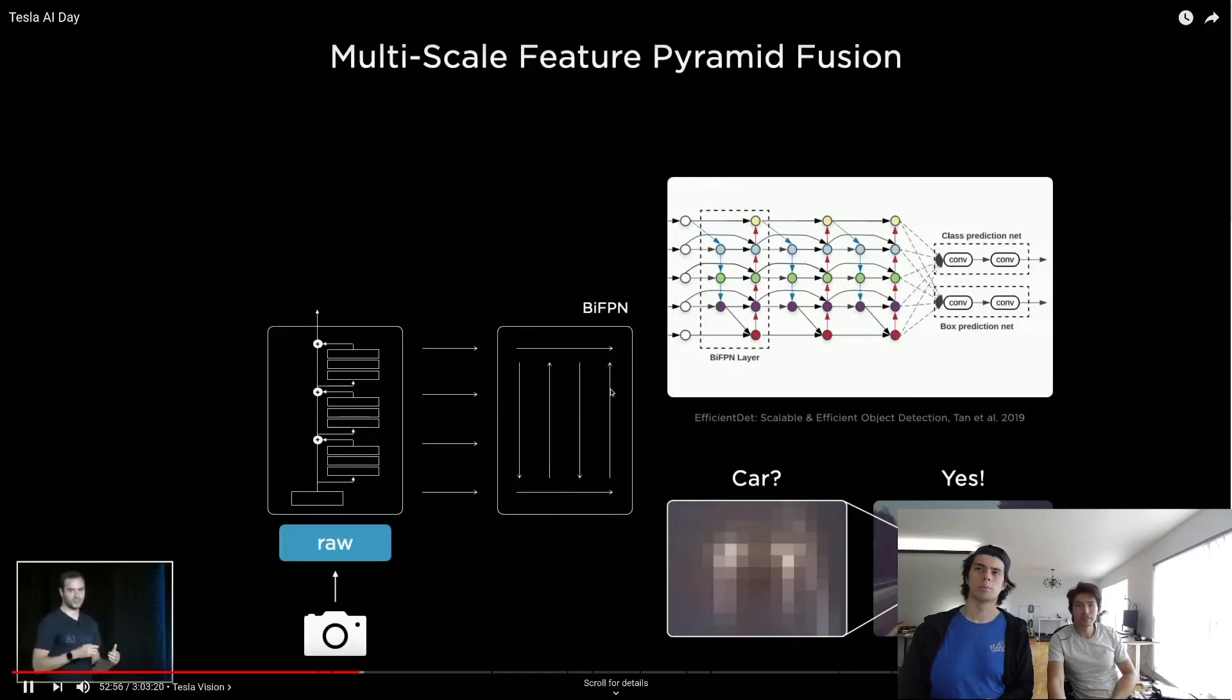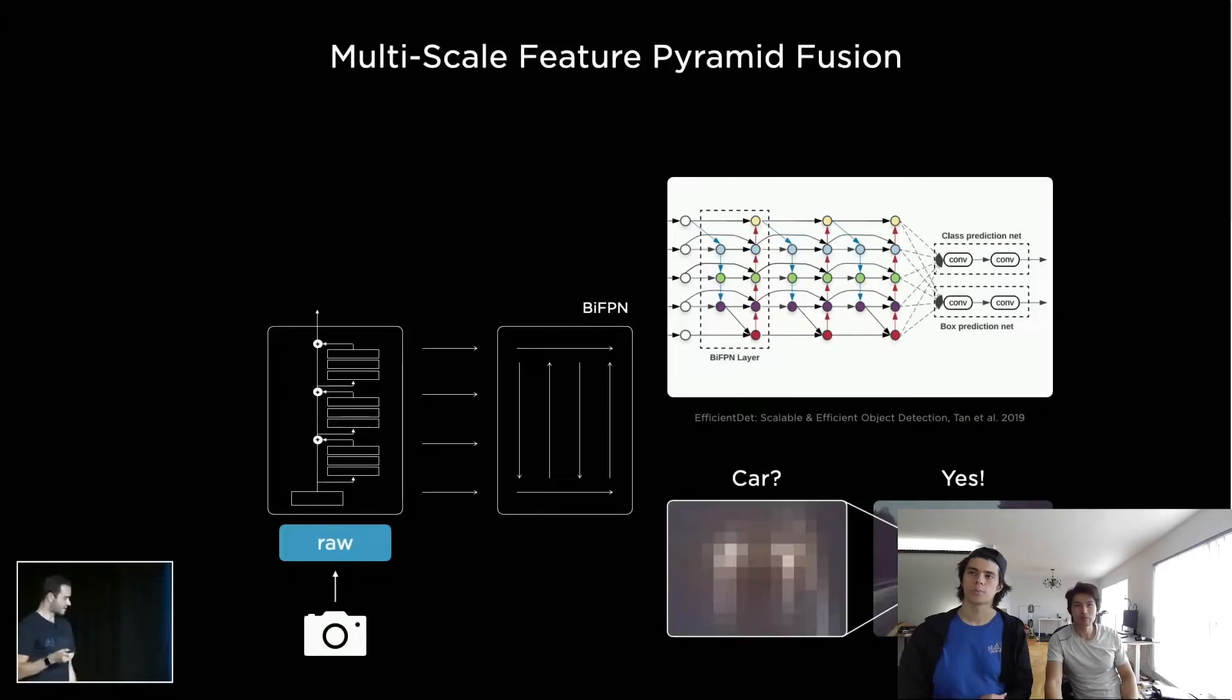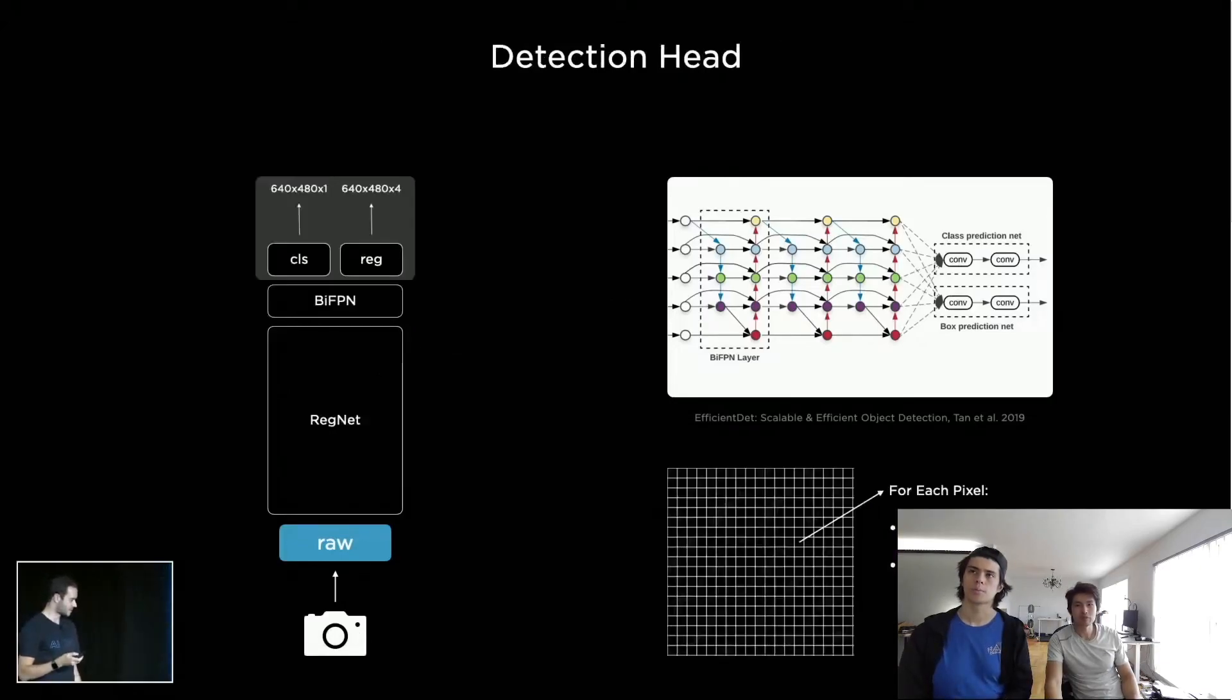We then like to process this with feature pyramid networks. In our case, we like to use BiFPNs. Just look at the pixels—it's not very clear what this thing is. But given the context, it's like, oh, well, most likely that's a car, right? After a BiFPN and feature fusion across scales, we then go into task-specific heads.